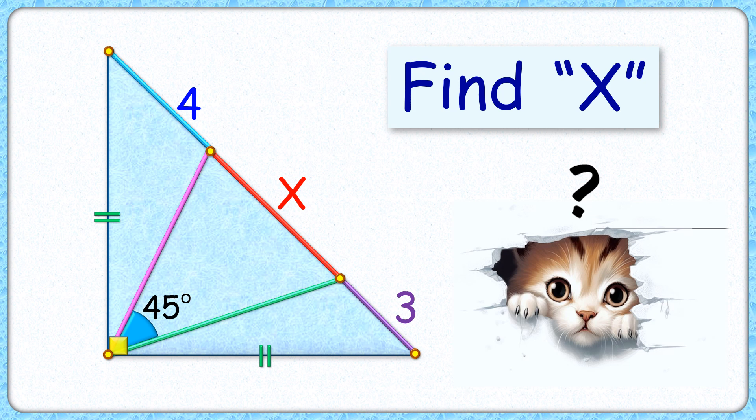This interesting question we have an isosceles right angle triangle with the hypotenuse length as 4 plus x plus 3 cm. The length x is sustaining an angle of 45 degrees at the vertex. Exciting part is with this limited data we have to find value of x.